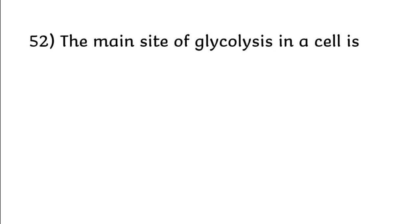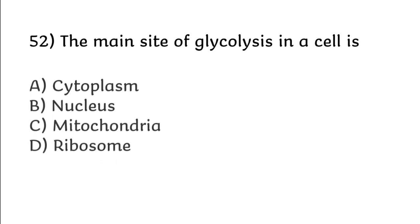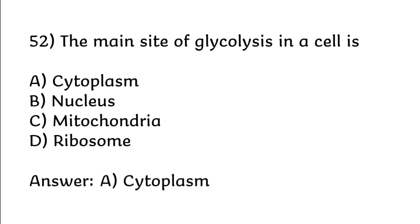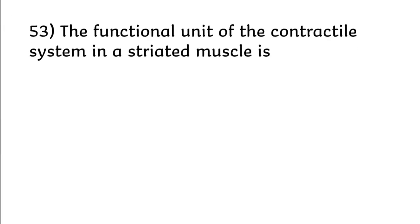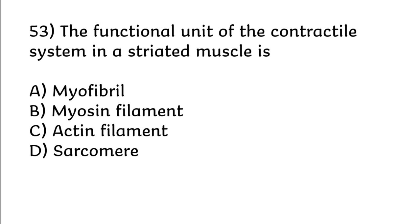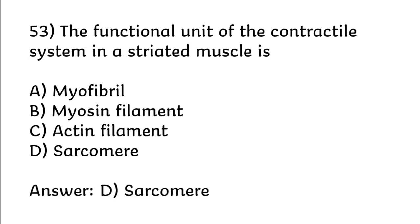The main site of glycolysis in a cell is: cytoplasm, nucleus, mitochondria, ribosome. Correct answer is option A: cytoplasm. The functional unit of the contractile system in a striated muscle is: myofibril, myosin filament, actin filament, sarcomere. Correct answer is option D: sarcomere.